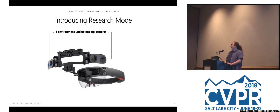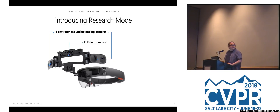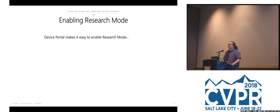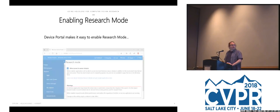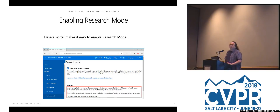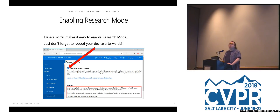We introduced research mode before and promised we'd deliver it. It actually shipped last month. If you have a HoloLens and accept the update to the April 2018 update of Windows 10, you should be able to get access to the four cameras, the depth sensor — the PV camera was already available before. Research mode is something you need to enable: as you've seen in the design, the hardware was designed for data to flow just to the ASIC. We're not confident enough about this feature to enable it by default, so in device portal you just click a checkbox and reboot, and you'll be able to access those sensors.